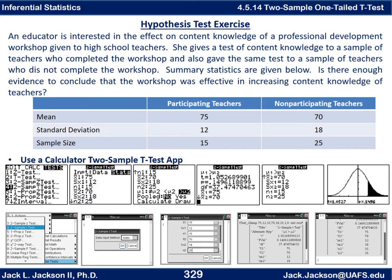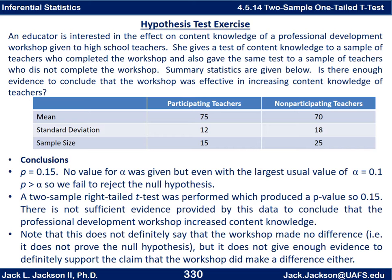The p-value is about 0.15. Now, they didn't actually give us an alpha value, which is a problem — someone needs to decide on alpha. The usual values are 0.01, 0.05, and 0.10. Even with the largest of those, our p-value of about 0.15 is larger than alpha. So with any of the usual alpha values, we would fail to reject the null hypothesis. Our conclusion: a two-sample right-tailed t-test was performed which produced a p-value of 0.15, so there is not sufficient evidence to conclude that the professional development workshop increased content knowledge.